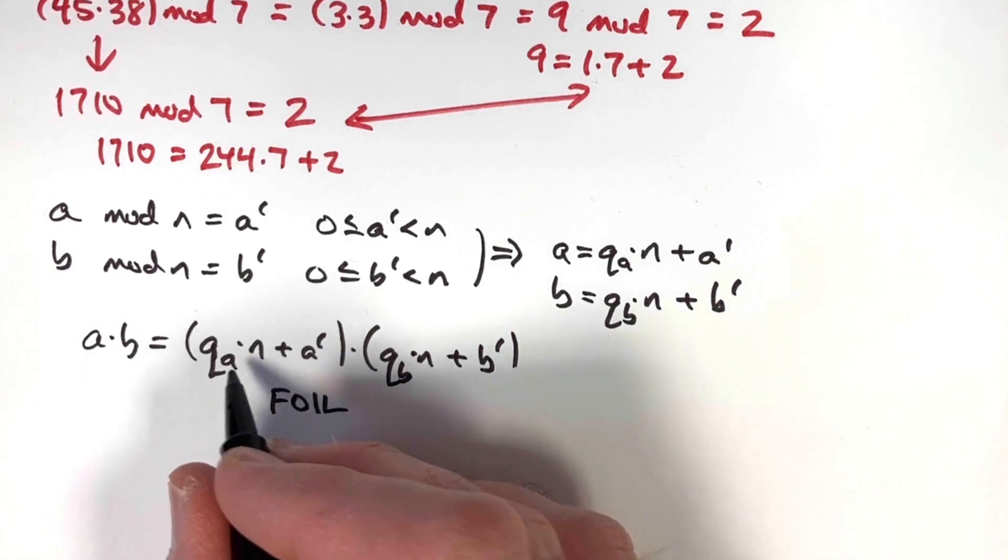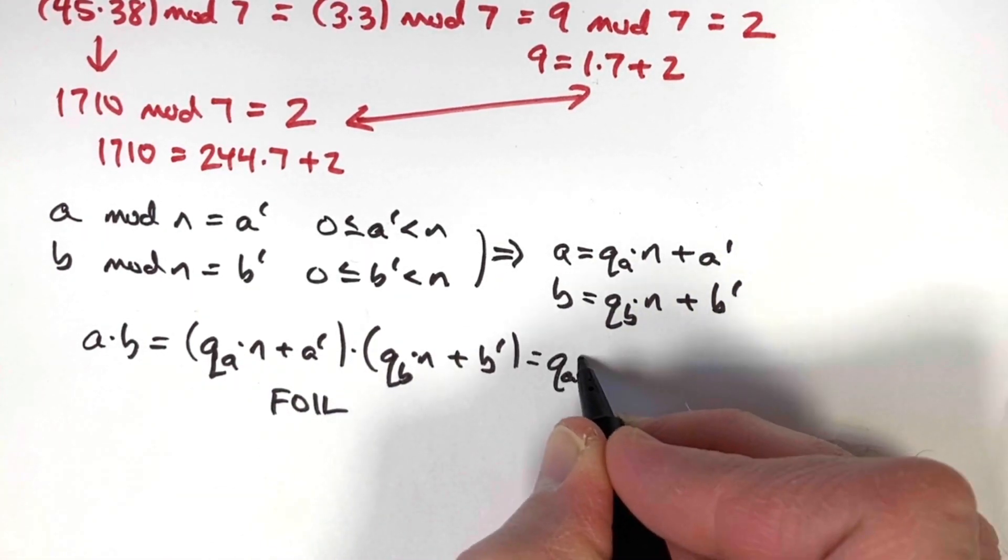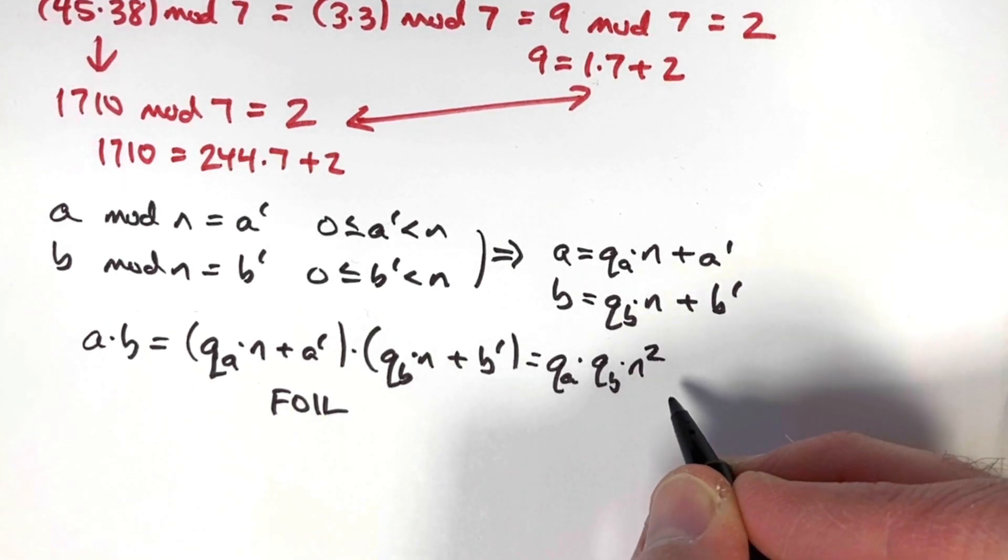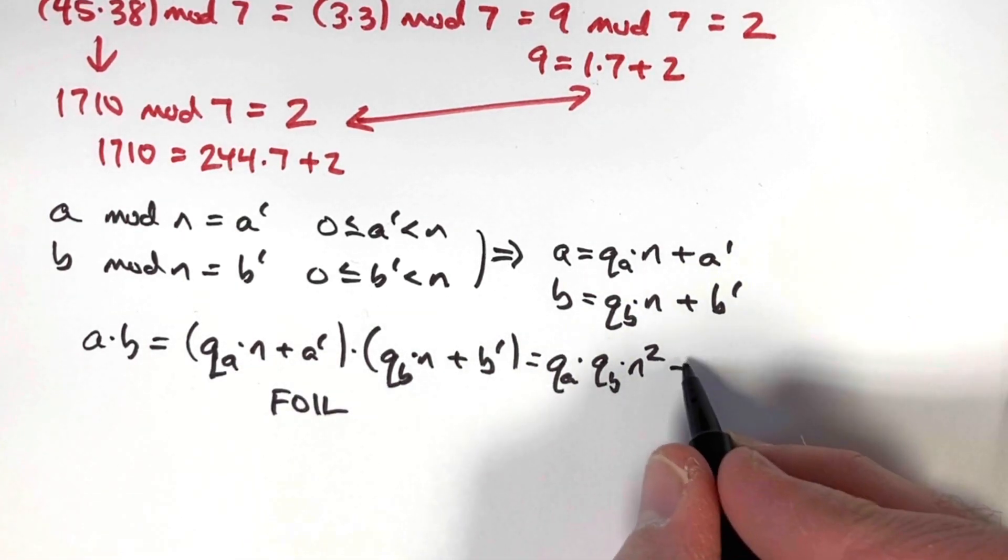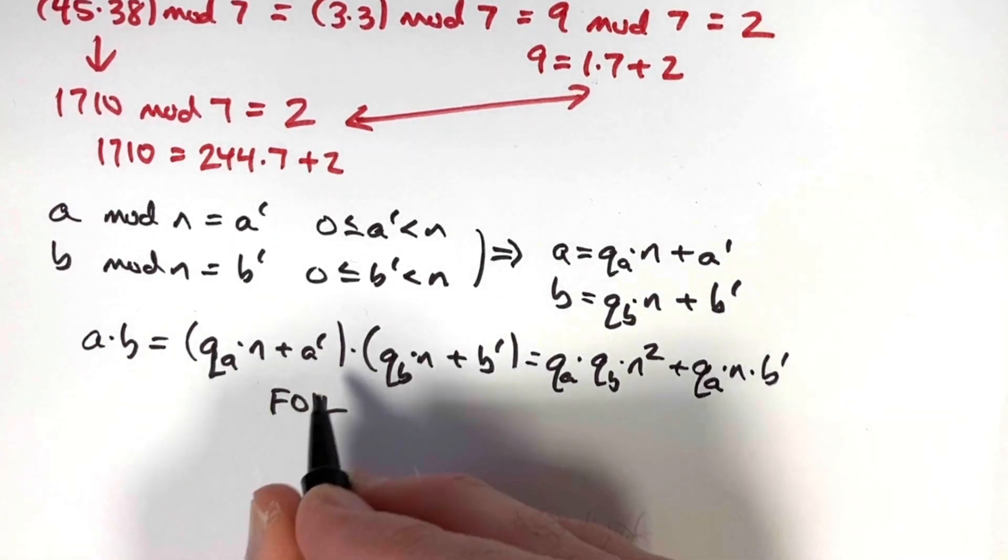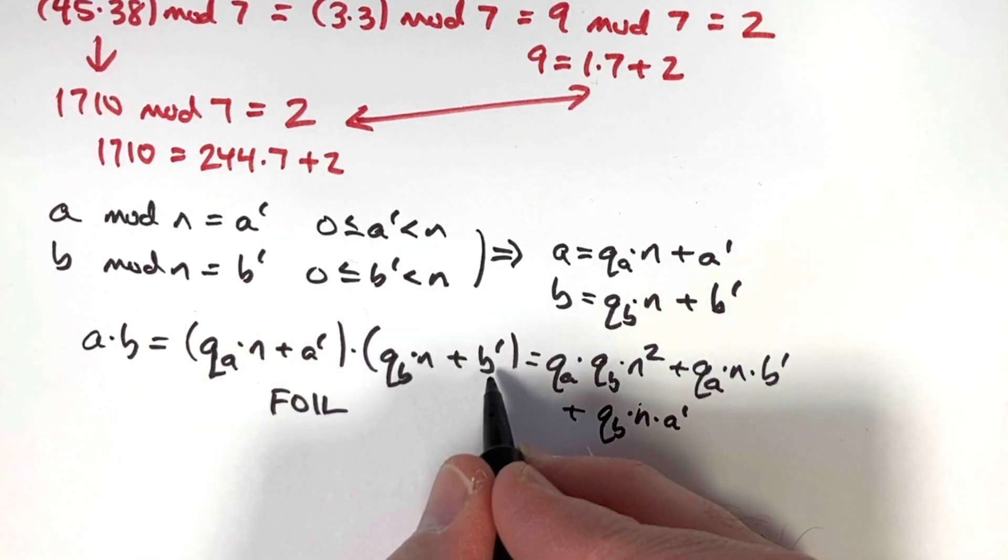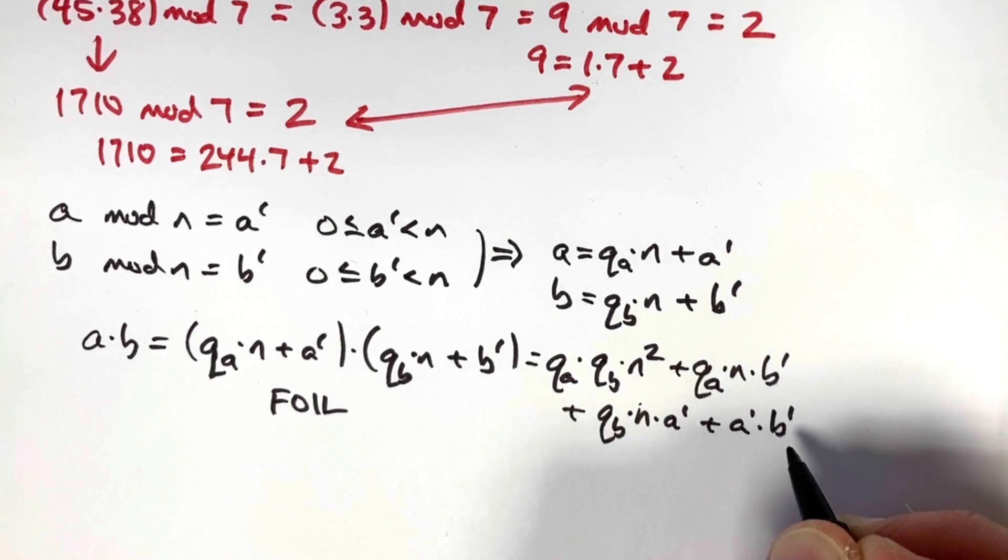The product of first times first is the product of these two things. That would be q sub a times q sub b times n times n. In other words, times n squared. Outside times outside will be q sub a times n times b prime. Inside times inside will be a prime times q sub b times n. I'll write that as q sub b times n times a prime. And last times last will be a prime times b prime.